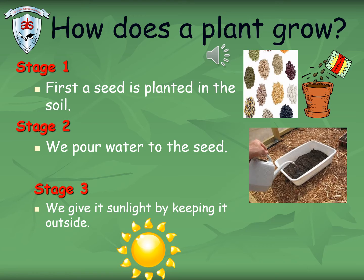First, a seed is planted in the soil. Can you see, children? There is a pot full of soil and a seed is planted there. Now we need to pour water to the seed. When we pour water to the seed, the seed is able to grow. Then we have to keep it in the sunlight by keeping the plant pot outside. We have to put water and we are going to get sunlight. Let us see what more other things they need to grow into a plant.